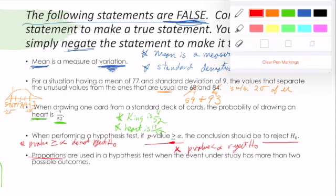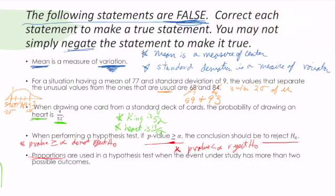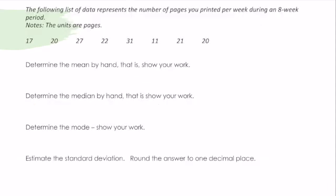Next, proportions are used in a hypothesis test when the event under study has more than two possible outcomes. Proportions, remember, like population of people who like chocolate ice cream and the population of people who don't like chocolate ice cream. I don't know why I'm thinking of ice cream, guys. But proportions are only used when there are exactly two possible outcomes, right? It's like yes, no, male, female, right? There's only two possible outcomes. And that's when you're going to use proportions. All right, so that was our first problem on the exam.